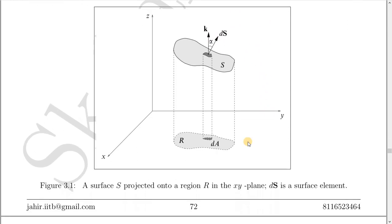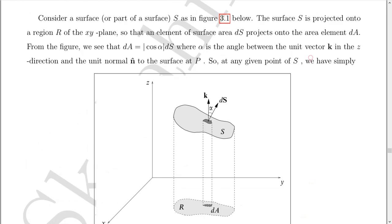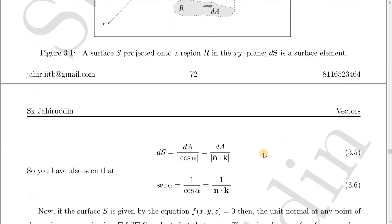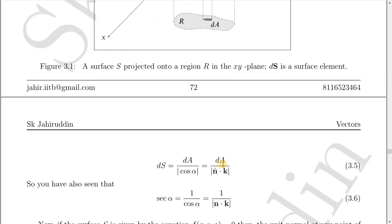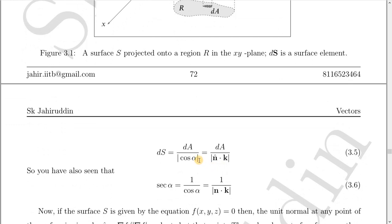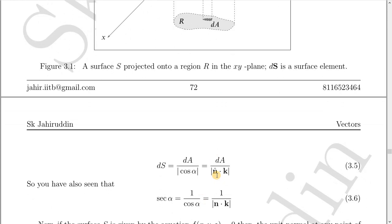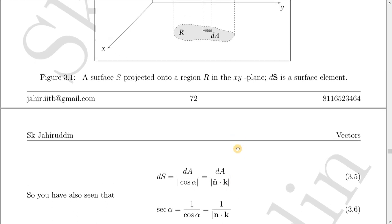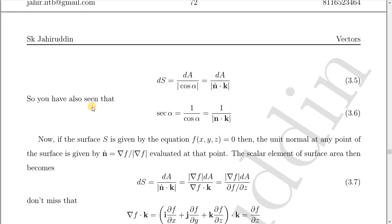At any given point we have simply dS = dA / |cos α|, since dA = cos α · dS. Now, cos α is the angle between the directions n̂ and k̂, so |cos α| = n̂·k̂. This follows from the basic vector rule: A·B = |A||B| cos θ.